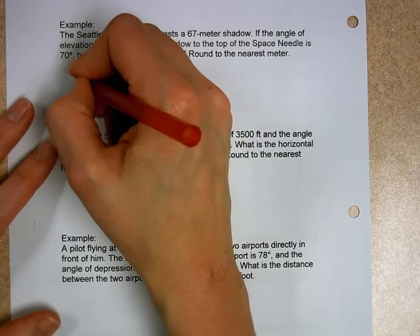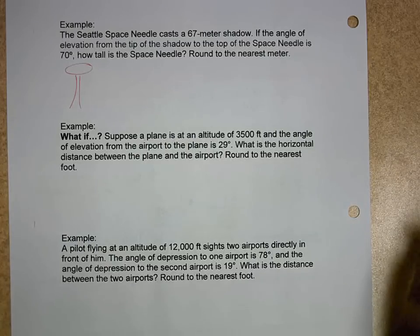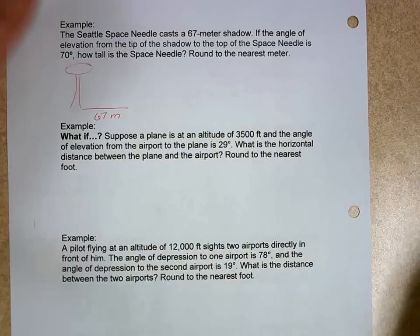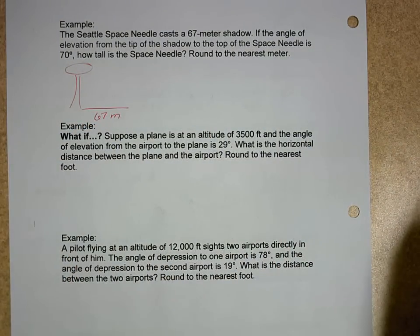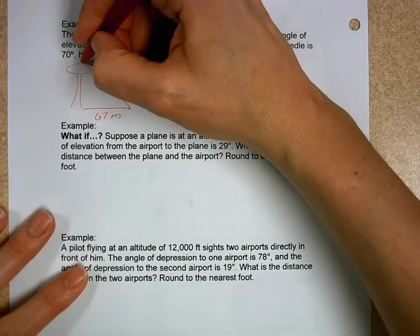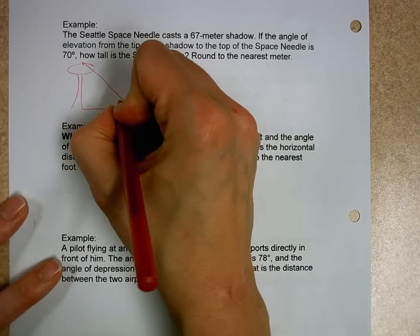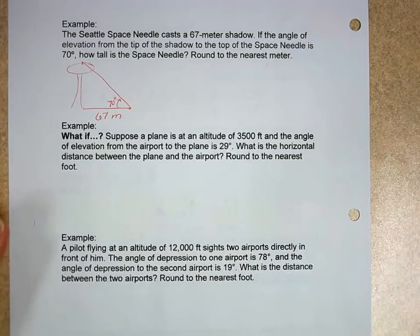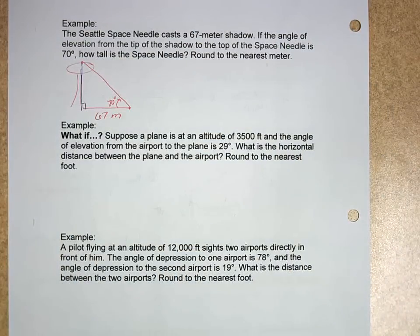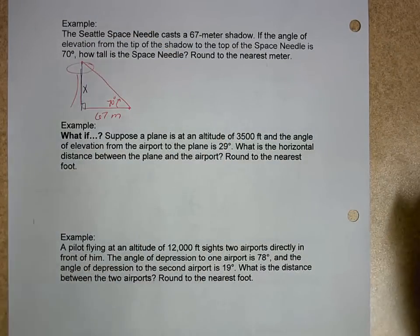We have the Seattle Space Needle, a really cool thing they built for a World's Fair years ago with a revolving restaurant on top. It casts a 67-meter shadow. Remember, the shadow is on the ground. If the angle of elevation from the tip of the shadow to the top of the Space Needle is 70 degrees, I have to look horizontally and then up. So looking at this, I have a right triangle.